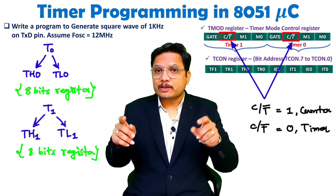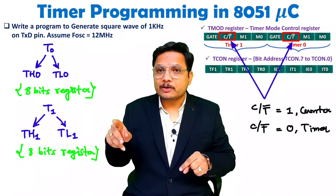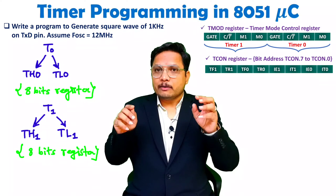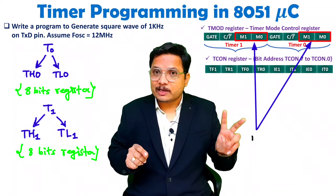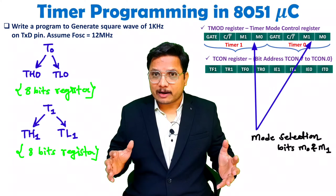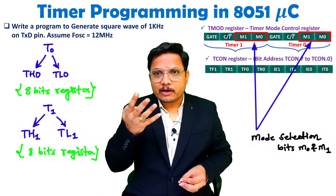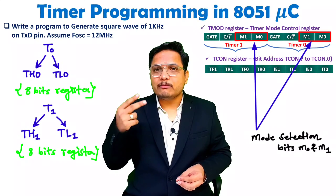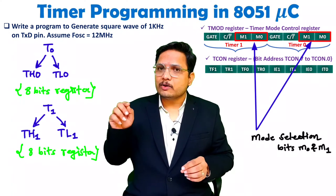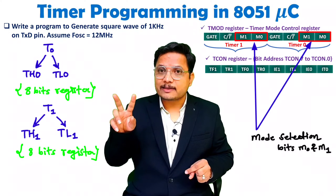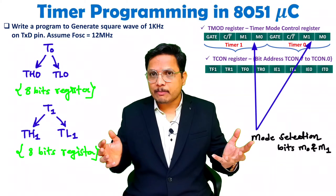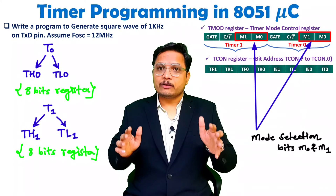Once you understand the C/T bar bit, you need to understand in which mode you want to operate. M0 and M1 are two bits for Timer 0 and Timer 1 that define in which mode these timers will work. There are four different modes: Mode 0, Mode 1, Mode 2, and Mode 3. Generally, we use Mode 1 only, so those two bits are set to 0 and 1. The reason is that maximum count is possible in Mode 1.